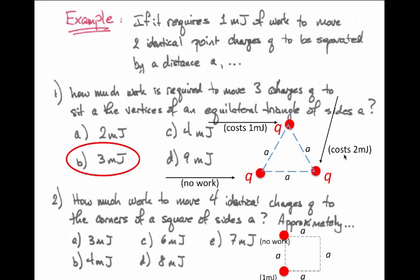When we bring in our second charge, that costs us one millijoule. The third charge, however, doesn't require just one millijoule. It requires one millijoule to bring it in proximity with this upper left corner, but then it requires an amount of work necessary to bring it near this lower left corner.